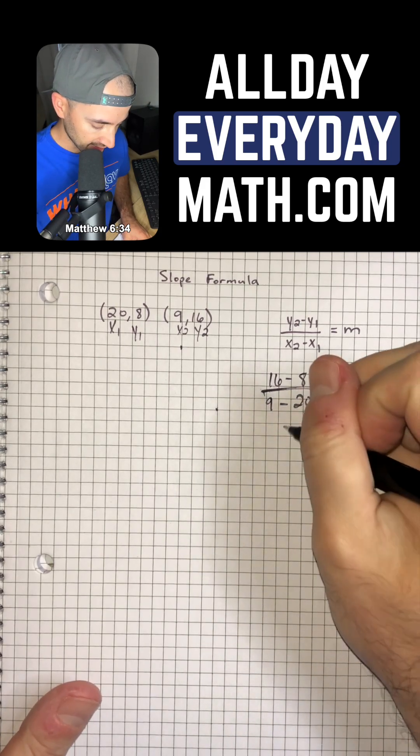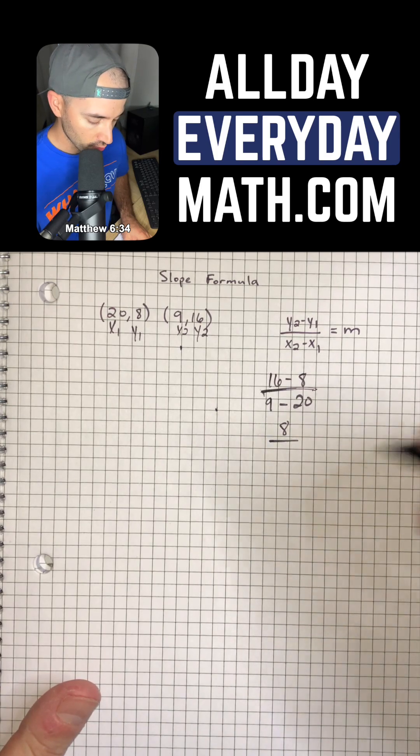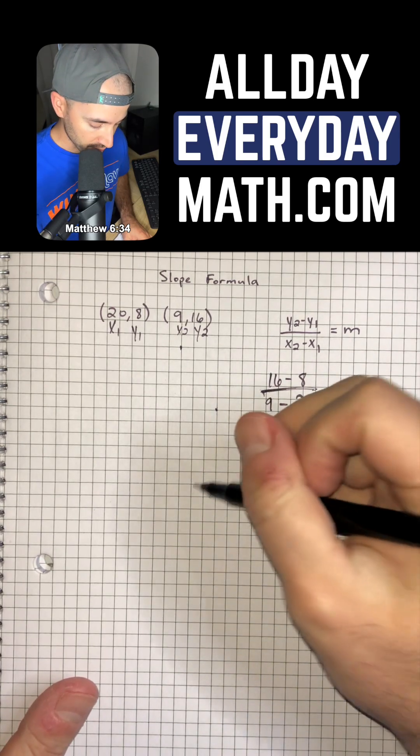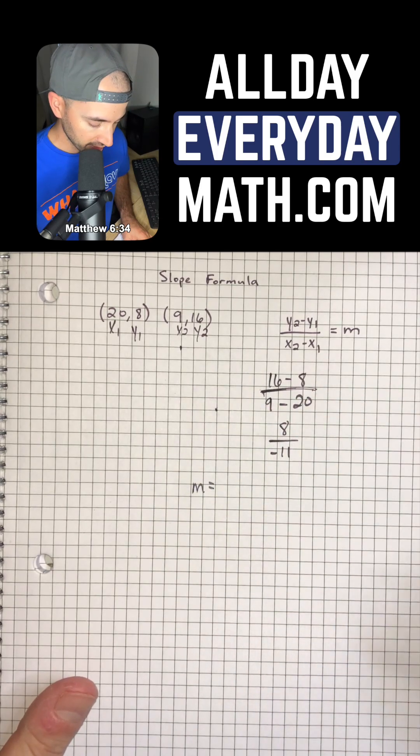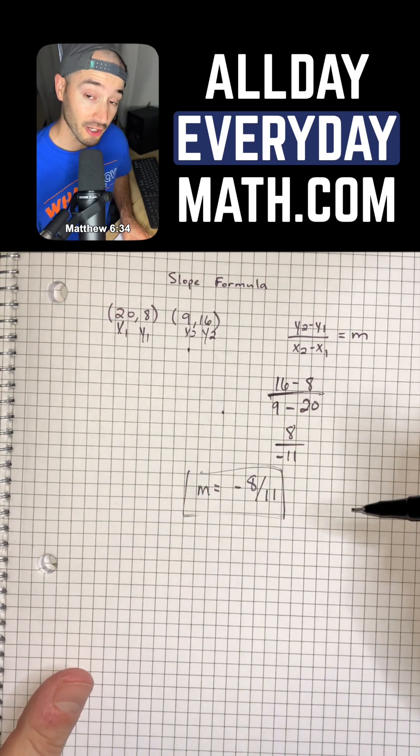So 16 minus 8 is 8, and then that's going to be over 9 minus 20, which is negative 11. And so we can't reduce this anymore, so our slope or m would be equal to negative 8 over 11. And that would be our answer.